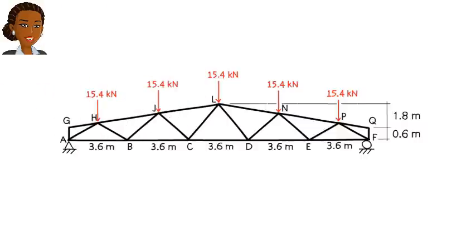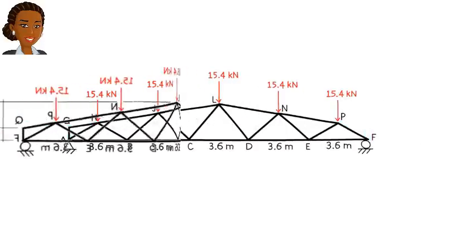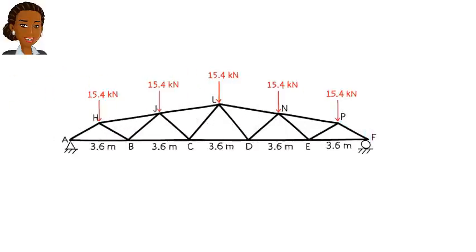Now, take another look at the truss. Do you see any other zero-force members? There are four more. AG, GH, FQ, and PQ are also zero-force members. Let's remove them from the truss. The remaining truss has 11 joints.